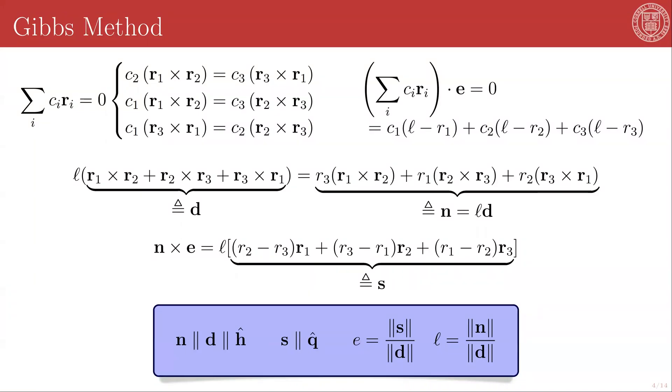Gauss's method provided us with a method for taking multiple observations of some orbiting object with respect to some observable location and figuring out the approximate position vectors of that object with respect to the center of mass of whatever it was orbiting at three different times. And we called those three final vectors the R sub i vectors. But how do we get from there to the actual orbital elements of the orbit of that object?